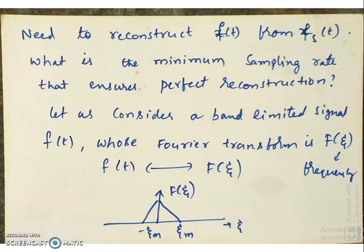We have to make sure that the sampling rate is sufficient to get back the signal F of t from Fs of t. In order to get that, let us assume that F of t is a band-limited signal. A band-limited signal has a non-zero spectrum between a given range of frequencies and is zero everywhere else. You can see F of t here has spectrum non-zero from minus ζm to ζm and zero everywhere else. A band-limited signal cannot be time-limited, and a time-limited signal cannot be band-limited — a signal cannot be both time-limited and band-limited.